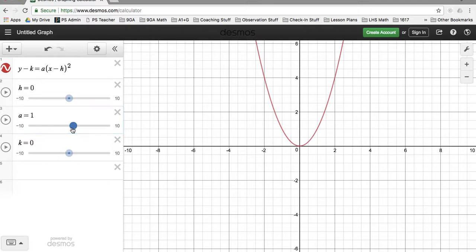So let's set this as 1. How does h change? If h is the number over here, if we have the h, as h increases, the parabola moves to the right. And if it goes to the negative, then it goes to the left.